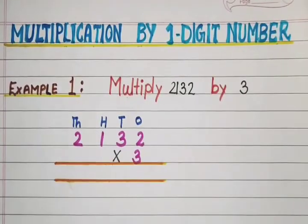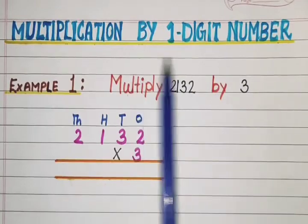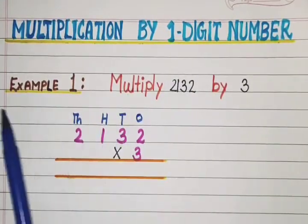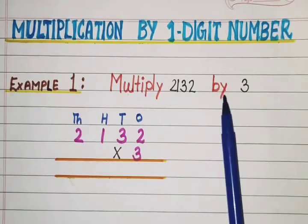Hello students, today we are going to study the topic multiplication by one-digit numbers. How do you multiply by a one-digit number? Here we have an example: multiply 2132 by 3.